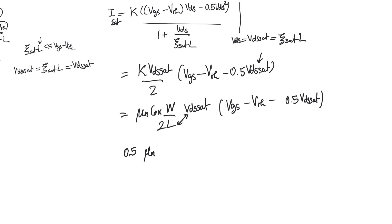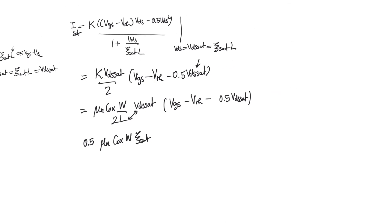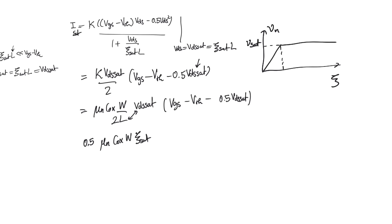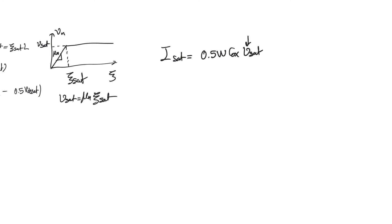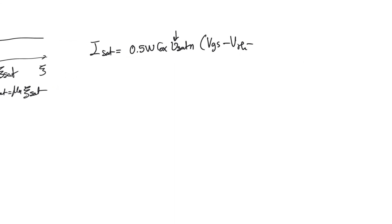Looking at the original curve relating carrier velocity V_N to electric field E drawn at the beginning of this video, and using the piecewise linear approximation, the saturation velocity V_SAT and saturation field ESAT are related through mobility: V_SAT equals μ_N·ESAT. This allows us to replace the μ_N·ESAT term with V_SAT, giving the saturation current as: I_SAT equals 0.5·W·C_ox·V_SAT_N times (VGS minus V_threshold minus 0.5·VDS_SAT).